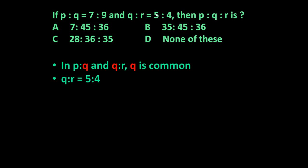So in place of 5 we have to bring the 9. For that, simply multiply it by 9 by 5. We just multiply this 5 by 9 by 5 and this 4 by 9 by 5.